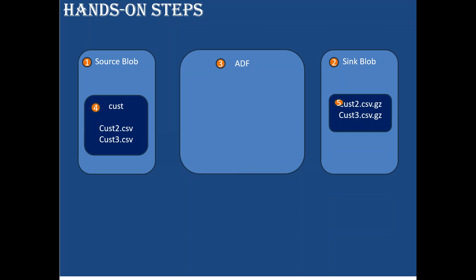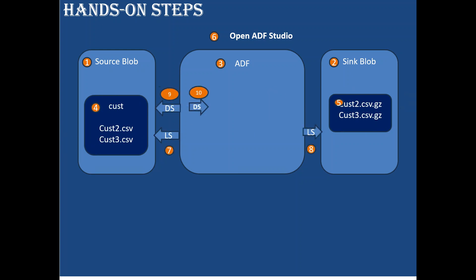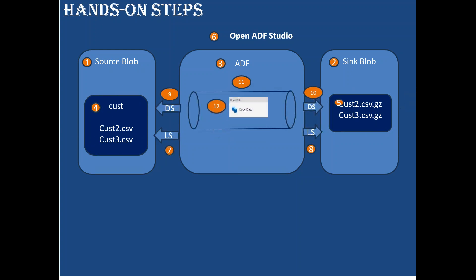On the target side, it will convert the two CSV files into cust2.csv.gz and cust3.csv.gz - that's how things will work. Next, we open the Azure Data Factory Studio, create two linked services, two datasets, and one pipeline. In that pipeline, I'll use a copy activity configured with source and sink.